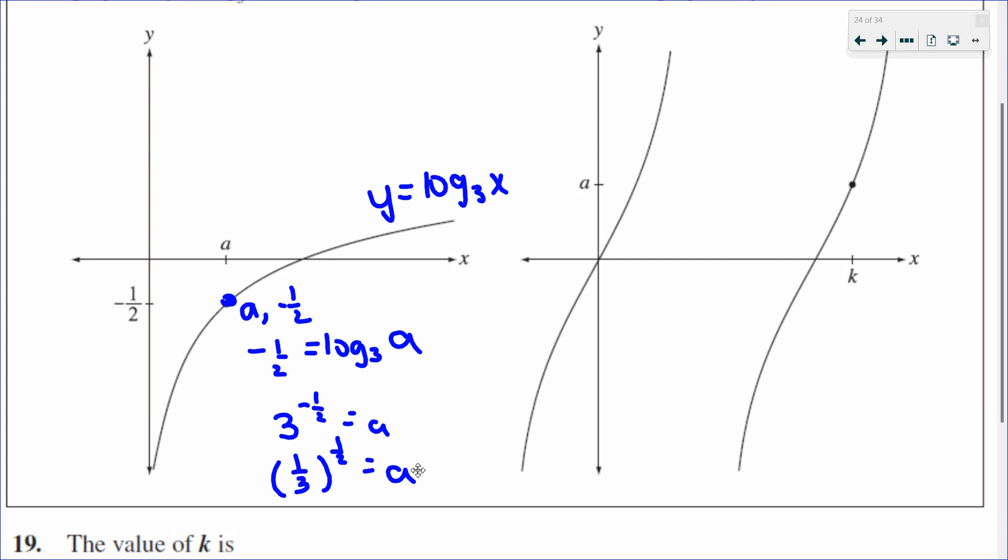So this is the same as the square root of one over three. So I know that A is going to be the square root of one over the square root of three, so one over root of three. Now, I don't need to rationalize my denominator because I'm not done the question yet.